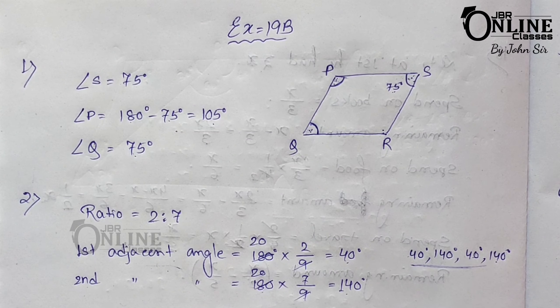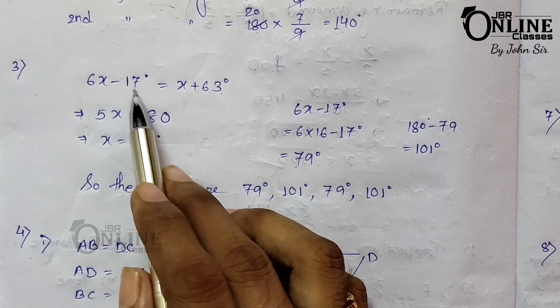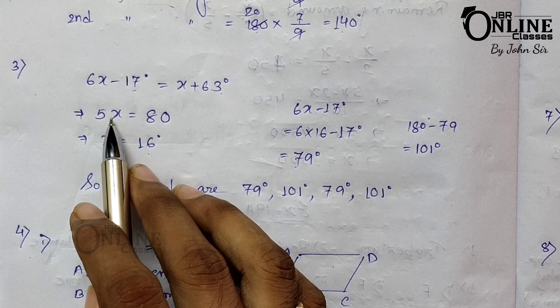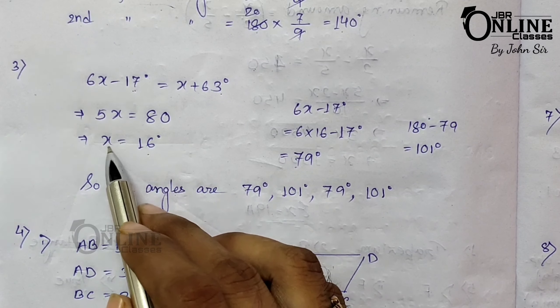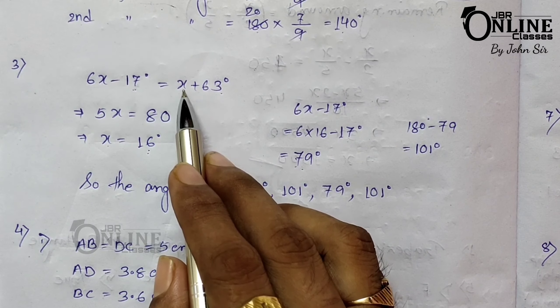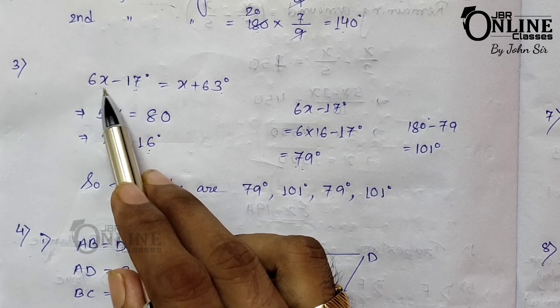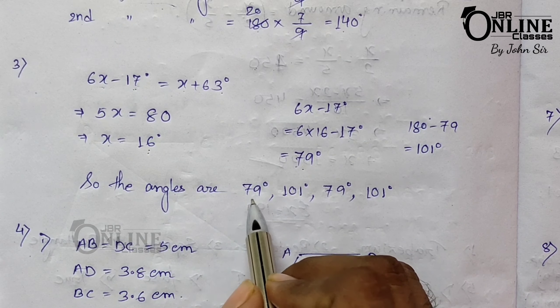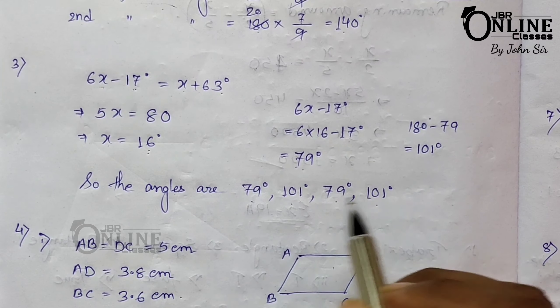Number three: two opposite angles of a parallelogram are (6x − 17)° and (x + 63)°. Since opposite angles in a parallelogram are always equal, 6x − 17 = x + 63, giving x = 16 degrees. Substituting x = 16, one pair of opposite angles equals 79 degrees each, and the adjacent angles equal 101 degrees each.